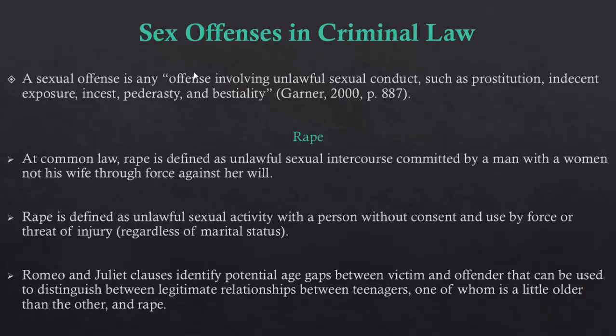So now let's apply these concepts to sexually based crimes. A sex crime is anything that an individual does that is against the law and is sexually based in nature. This could include contact offenses like prostitution, incest, or bestiality, or non-contact offenses like indecent exposure or child pornography. When we talk about rape in the context of criminal law, we first have to look at common law definitions. Under common law, rape had to occur between a male offender and a female victim, provided that the two parties were not married — if they were married, then marital rape exemptions applied.